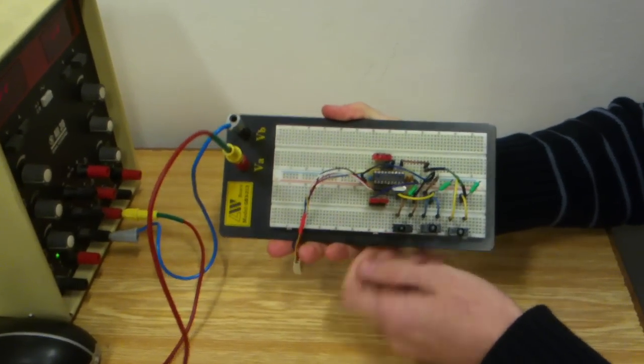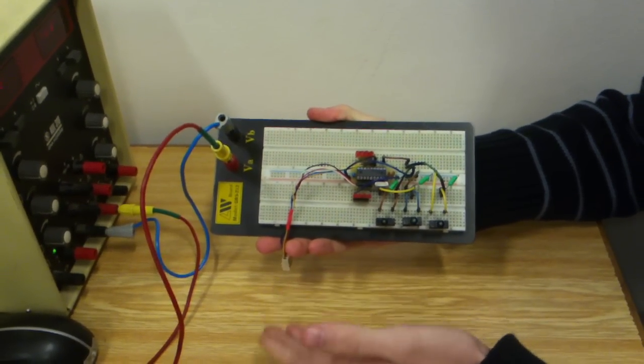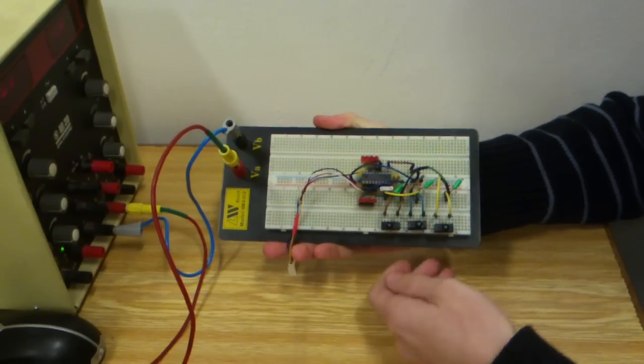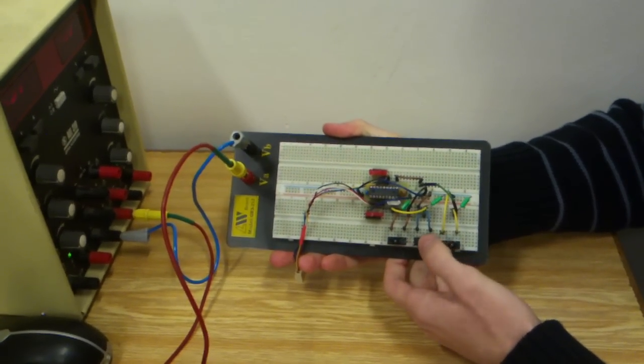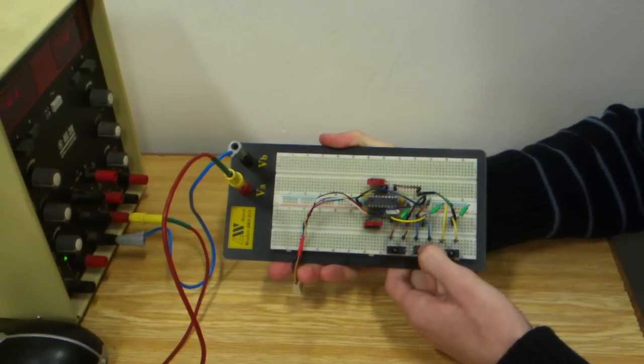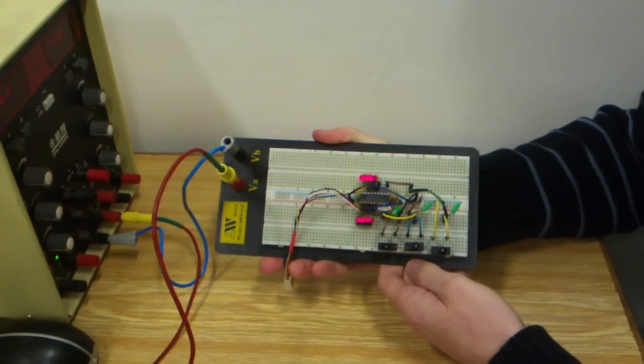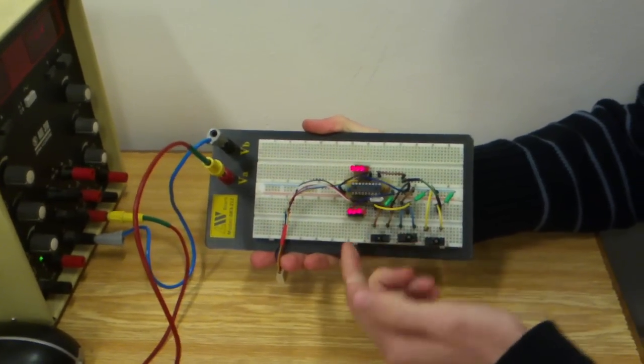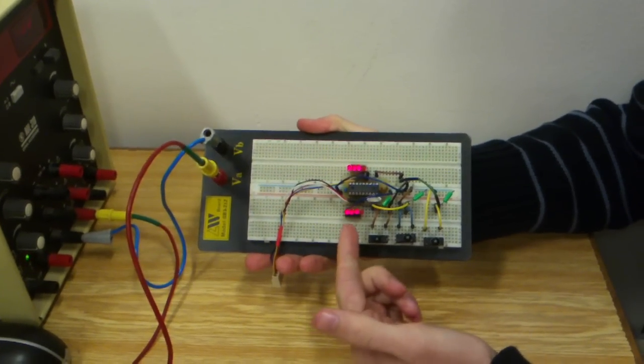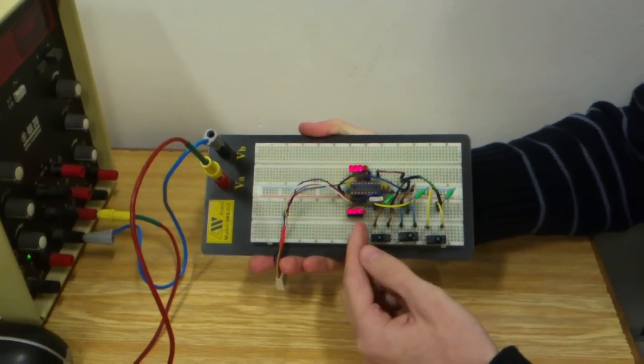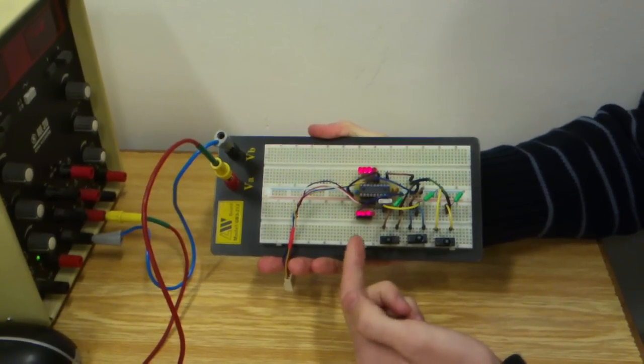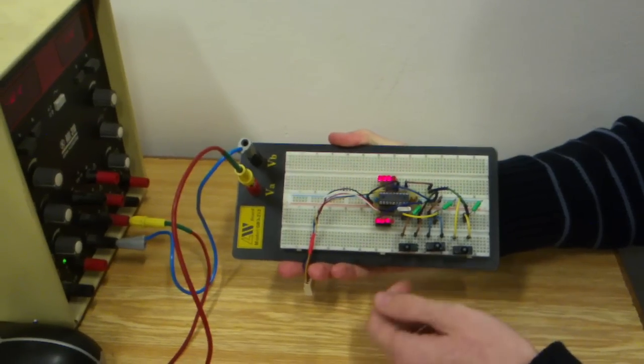When I turn it on, there is no signalization because there is no information about the active gear. So I will simulate the neutral. Now you can see these diodes signal that the outputs of the microprocessor are connected.